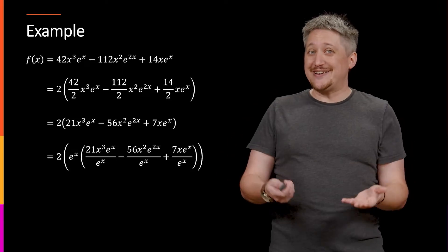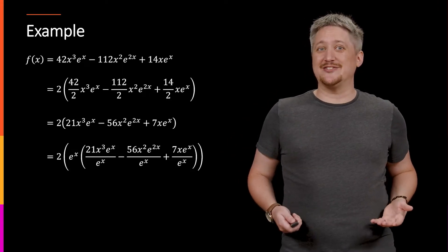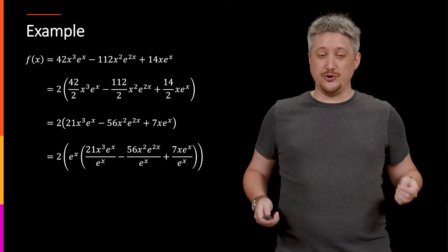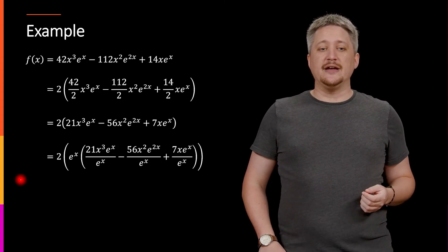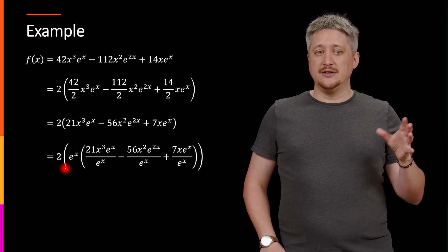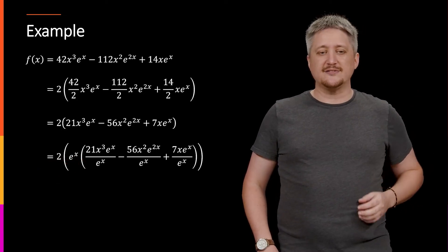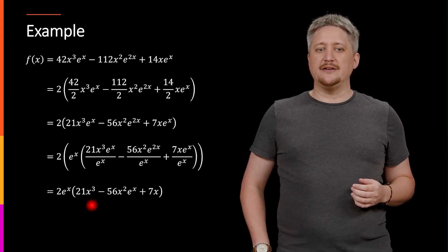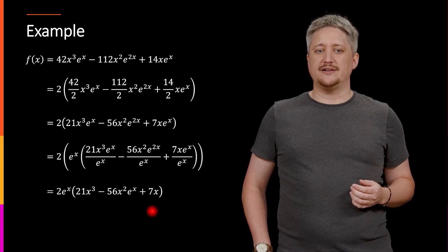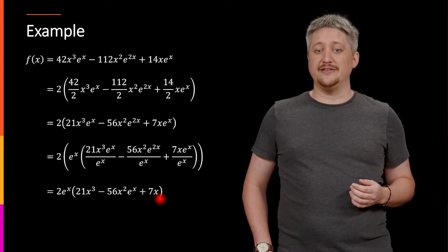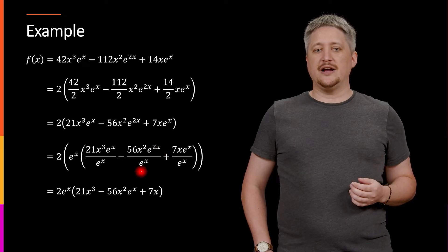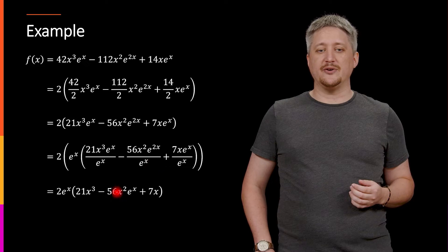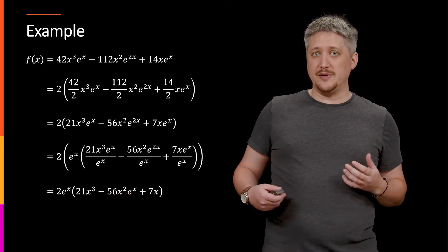So effectively I am dividing out these terms and again as long as it really was a common factor all of that division should go through without a hitch. And I can then merge the 2 and the e^x now that I've pulled out the e^x and that gets me the 2 and the e^x are together over here. And I cancel out those e^x, that's how I get the 21x³ and the 7x, and here I don't quite just cancel, there's really another e^x up here. So I have 56x²e^x left over as my middle term.